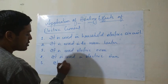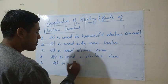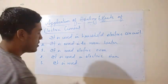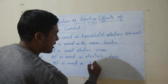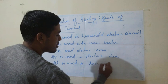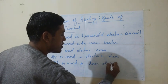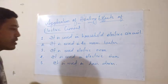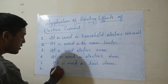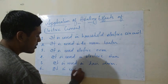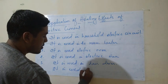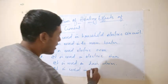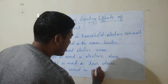It is used in the electric oven. It is used in the electric iron. It is also used in the hair dryer. Number six: it is used in the electric heater.